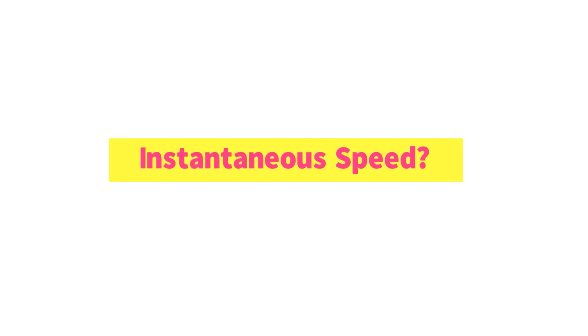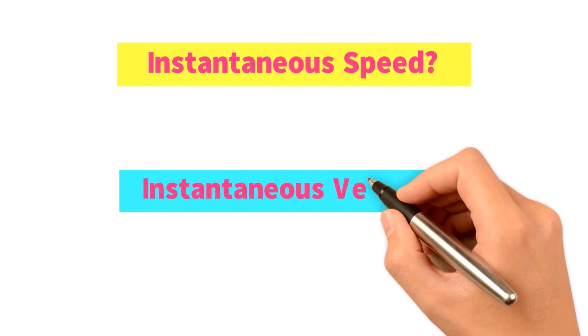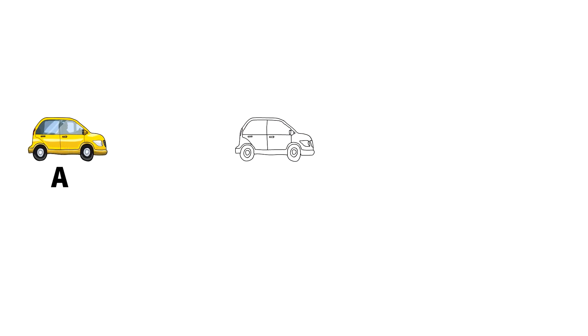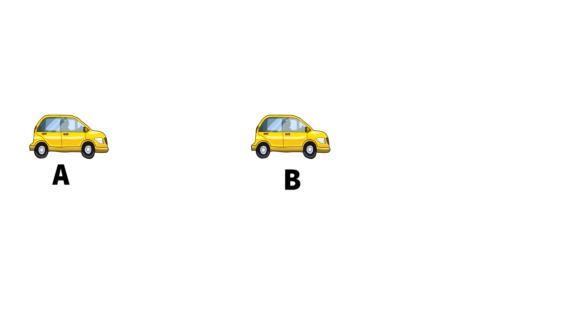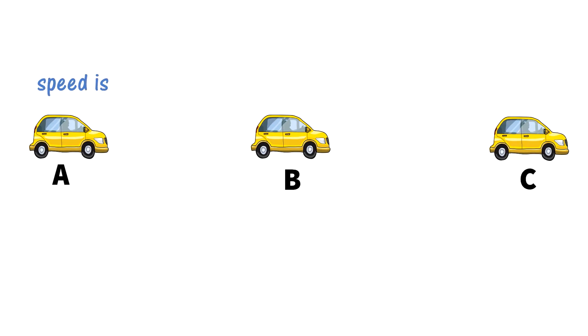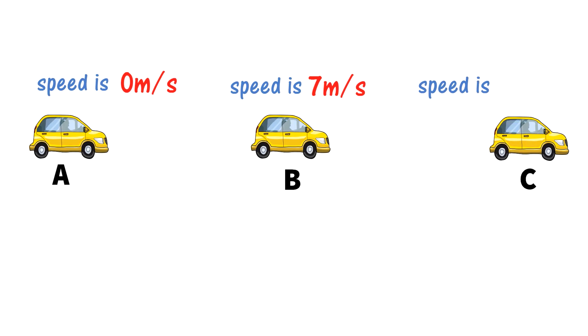What is instantaneous speed and what is instantaneous velocity? Let a car be standing at point A, moving to point B, and then from point B moving to point C. Initially the car was standing at point A and its speed was 0 meter per second. When the car was crossing point B, the speed was 7 meter per second, and when crossing point C its speed was 12 meter per second.